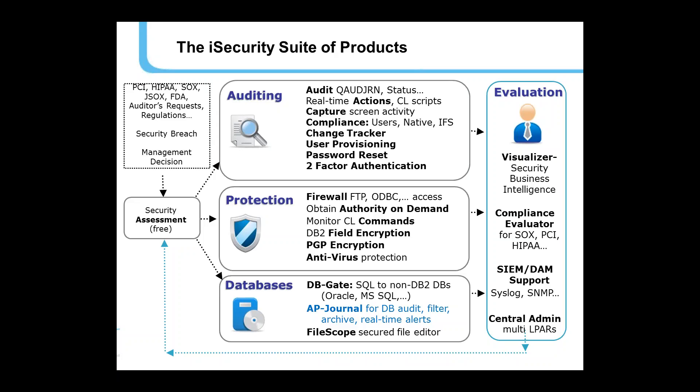The iSecurity suite of products is broken down into three sets of solutions: auditing, protection, and databases. In databases, you'll see AP Journal for database auditing, filtering, archiving, and real-time alerts. On the right, in the area of evaluation, we have a product for graphical business intelligence of a security-related data warehouse of log events from the network and from your applications, a compliance evaluator for evaluating how close we are to complying with SOC and PCI, integration with SIEM or DAM solutions, and a central administration capability for multiple LPARs.